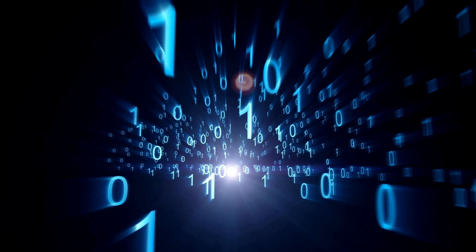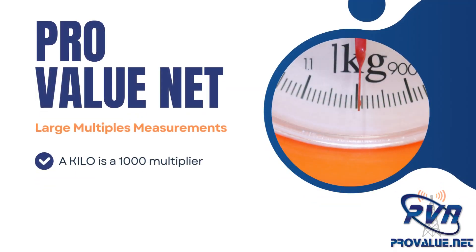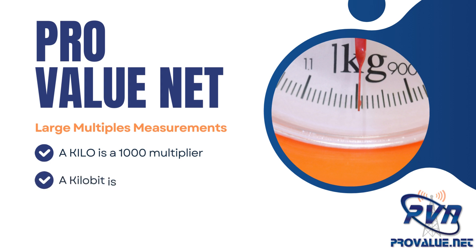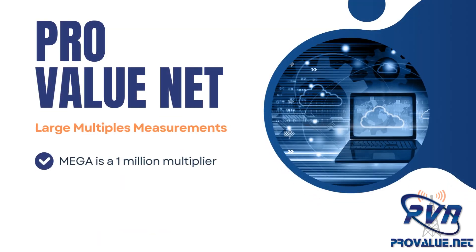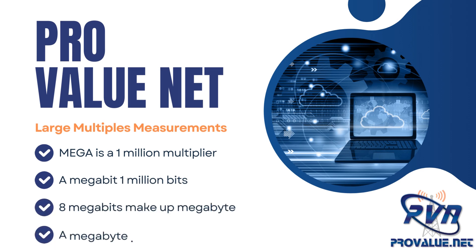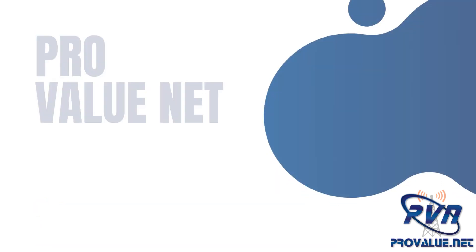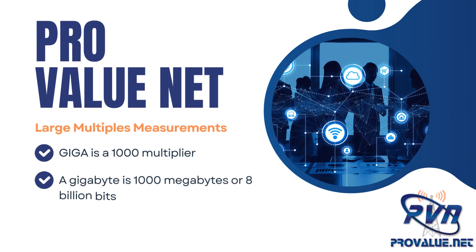But let us get back on track. For larger numbers of bits and bytes, we use standard scientific prefixes for large multiples. Kilo is a 1,000 multiplier, so a kilobit is 1,000 bits. 8 kilobits make up a kilobyte, which makes a kilobyte 8,000 bits. Mega is a 1,000,000 multiplier — a megabit is 1,000,000 bits, and 8 megabits make up a megabyte, equal to 8,000,000 bits. There is also giga, which is a 1,000 multiplier, meaning a gigabyte is 1,000 megabytes, or 8 billion bits.